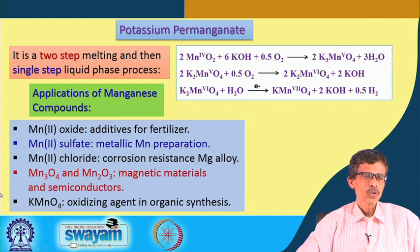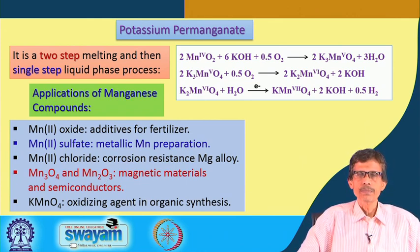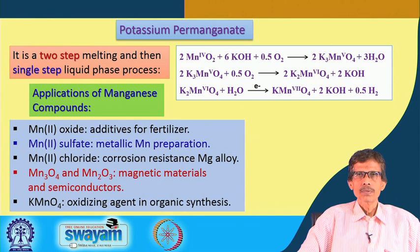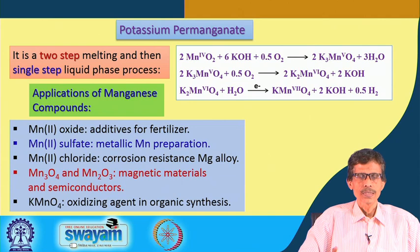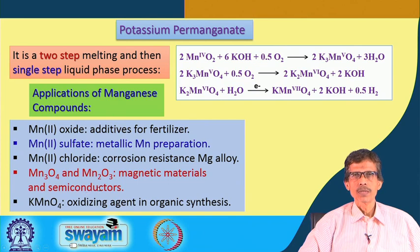Then if we go for Mn3O4 and Mn2O3 — these two forms of oxides are very useful magnetic materials. Making magnetic tapes, like Fe3O4 or Fe2O3, those are also very useful as magnetic tapes and other magnetic applications. They are very useful magnetic materials and sometimes can also be used for semiconducting applications.